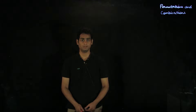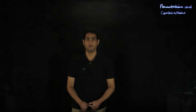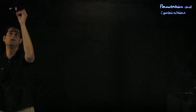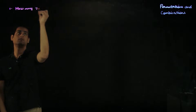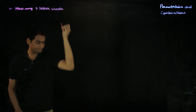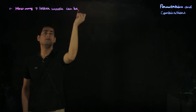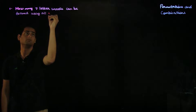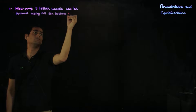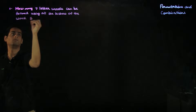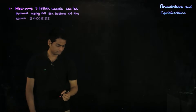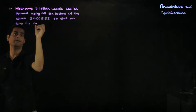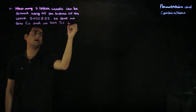Hello, and welcome to a new lecture on permutations and combinations. In this lecture, we will look at some example applications of the theory we have seen so far. The first example asks you to find the number of seven-letter words that can be formed using all the letters of the word SUCCESS, so that no two C's and no two S's occur together.